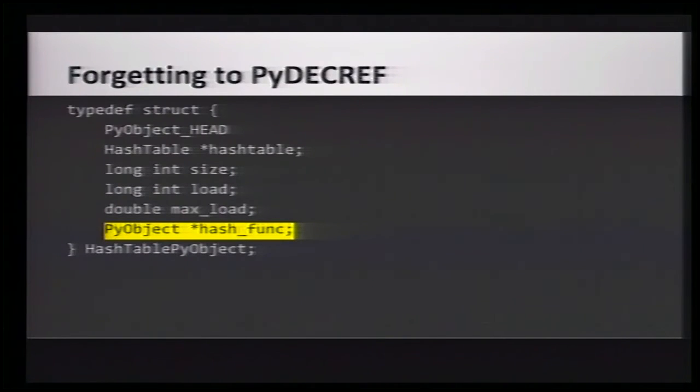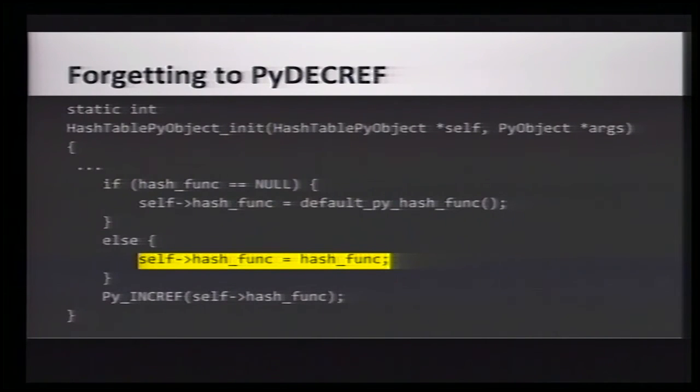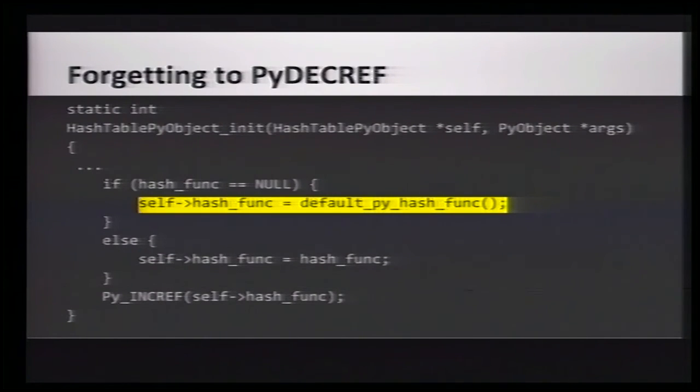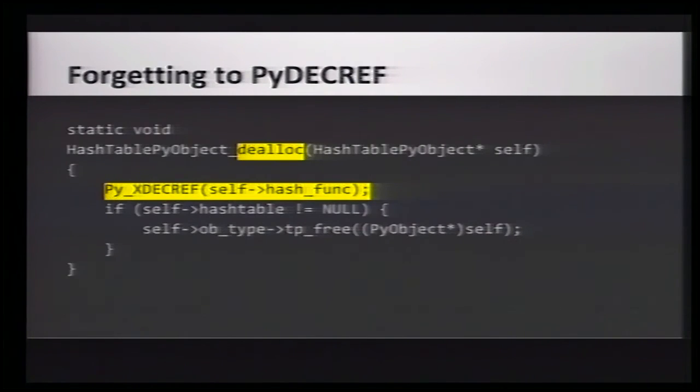But the other type of mistake you can make is forgetting to call PyDecref when you're done with an object, and I also ran into that issue. So remember that my Python hash table type struct here, it contains a pointer to another Python object, namely the hash function, used to hash keys. So here's a snippet from the initialization function of hash tables. We do some other stuff, but I set the object's hash func attribute either to the hash function passed in by the user when the object was initialized, or to Python's built-in hash function, just as a default. I also increased the reference count on this hash function object, because I need to tell Python, like, hey, I'm going to be working with this function object for a while. Please don't clean it up. So we say that each hash table object owns a reference to the hash function object.